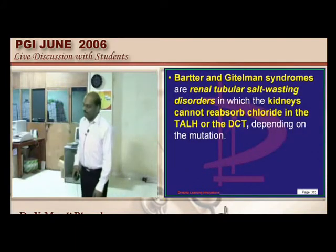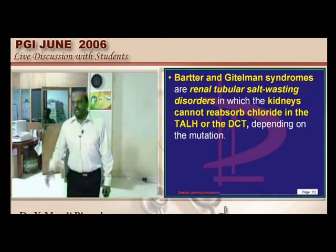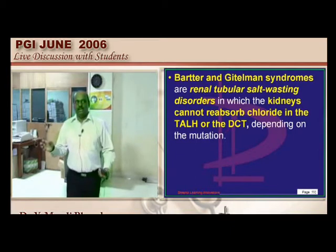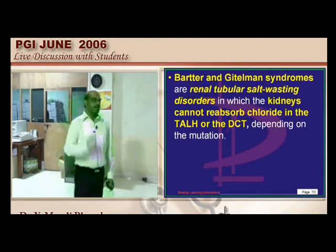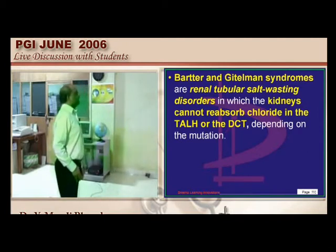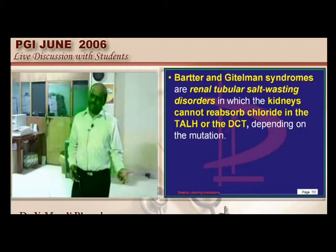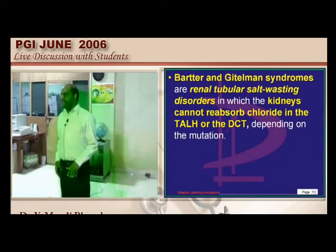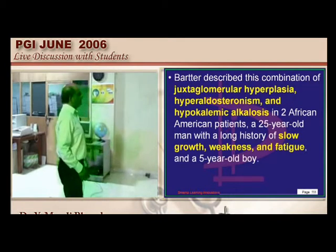Bartter syndrome, Gitelman syndrome, and Liddle syndrome all involve renal tubular problems at various levels. Bartter and Gitelman are renal tubular salt-wasting disorders where kidneys cannot reabsorb chloride normally. Chloride is reabsorbed at the thick ascending limb of loop of Henle and the distal convoluted tubule. Bartter originally described two African-American patients with slow growth, weakness, and fatigue.